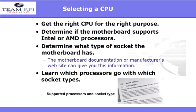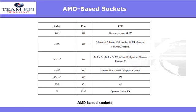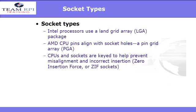First, it's important to get the right CPU for the right purpose. You need to determine if the motherboard supports Intel or AMD — this is important because you need to determine the type of socket the motherboard has. The A+ certification expects you to learn which processors go with which socket types. Be sure to pay careful attention to CPU pins, the power supply, and always make sure you have adequate cooling. Also consider whether to leave the CPU at its standard settings or overclock it — but remember, overclocking can be extremely dangerous to your PC.